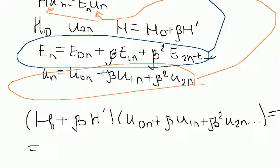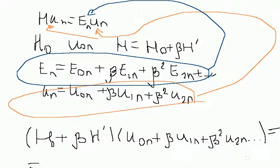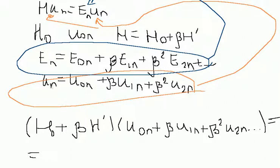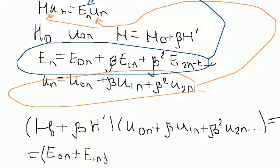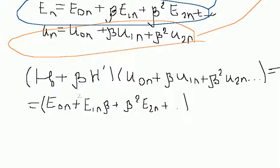After this multiplication, I perform only algebraic permutations. I collect terms by the same powers of β. For example, terms with β to the zero power give: H₀·ψ₀ = E₀·ψ₀, which is just the zeroth-order equation. The key step is collecting approximations by the same powers of β.